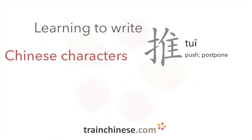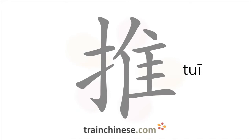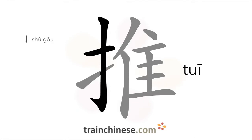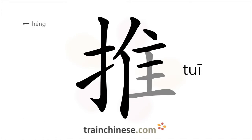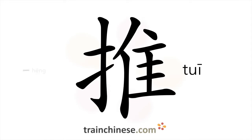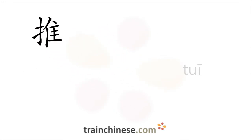Let's take a look at this character: 推! It's written with 11 strokes. So what components is this character made up of? You can see the hand radical in this character.